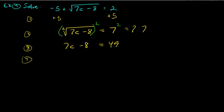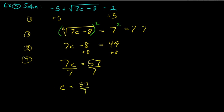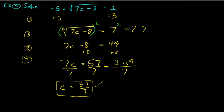Add 8 to both sides: 7c equals 57. Divide by 7 and c equals 57 over 7. Is that reducible? 57 is 3 times 19, and neither 3 nor 19 is a factor of 7, so nothing cancels. The answer stays as 57 over 7 — as long as it checks out.